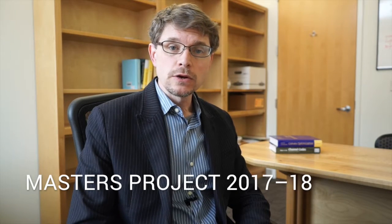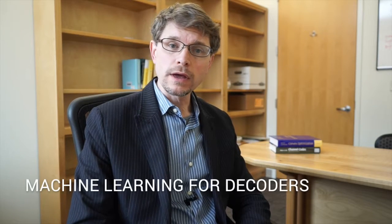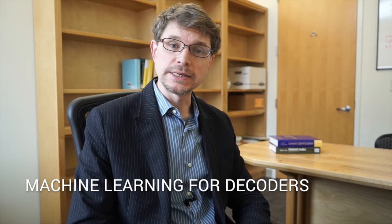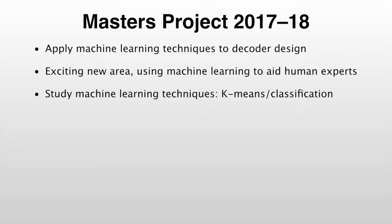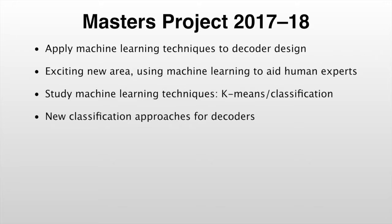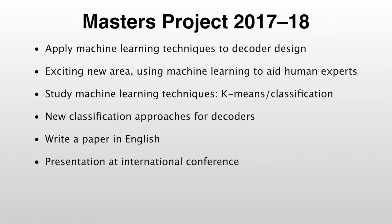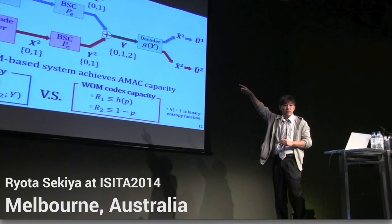Master's students joining our lab in 2017 will be assigned the following project: we're working on applying machine learning techniques to the design of decoders. This is an exciting new application of machine learning to the area of communications. You will study machine learning techniques such as the K-means algorithm and classification approaches, as well as error correcting decoding algorithms, and propose new classification approaches for decoders. You can write a paper in English, and if accepted, you'll be able to go to an international conference and present it. It's very common for students in our lab to go to international conferences.